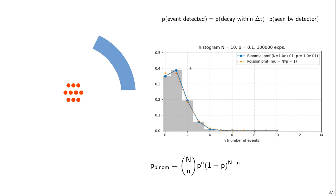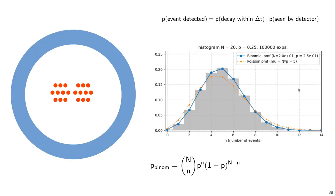Now we can have more than three outcomes — we can see 0, 1, 2, or up to 10 events, though seeing 10 is not very likely. Again, running 100,000 experiments, the distribution shown in the gray bars is again perfectly described by the blue curve — the binomial distribution for n equals 10 and p equals 0.1.